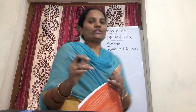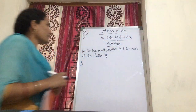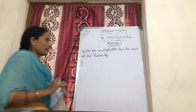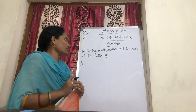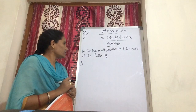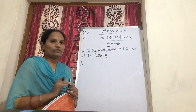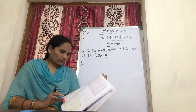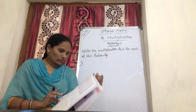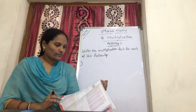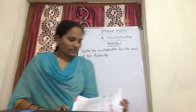Welcome to our class. Next step, let's see Activity 1 — random articulation fact for each of the following. Open your test book, children. Page number 42. First one.